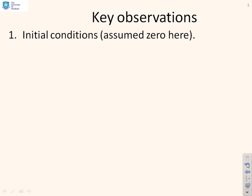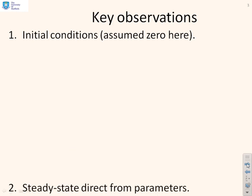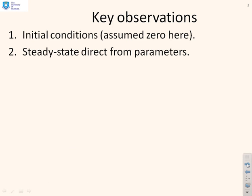Now, we're going to assume that the initial conditions are zero. We've said that many times because they complicate things and you cannot do anything generic if you have different initial conditions. You can get the steady state directly from the parameters. We've done that before, but we'll remind you in a bit.